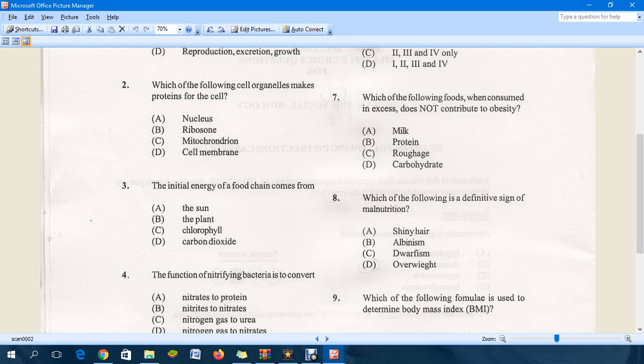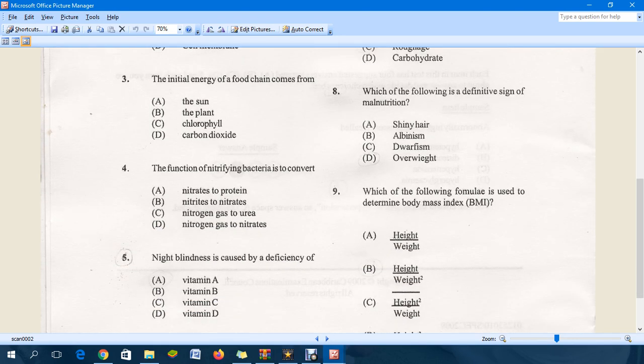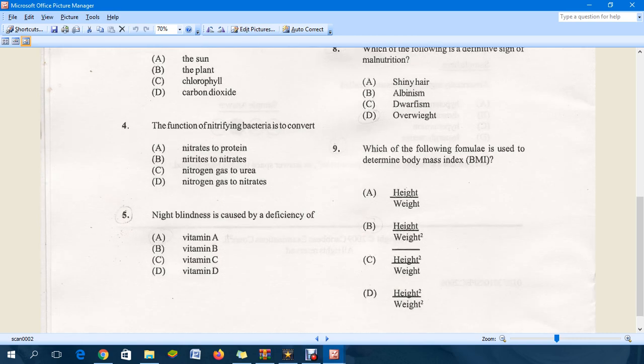Question four: The function of nitrifying bacteria is to convert - the answer is B, converting nitrite to nitrates. When answering this question you have to be knowledgeable about the carbon cycle, so you have to study the diagram that represents the carbon cycle.